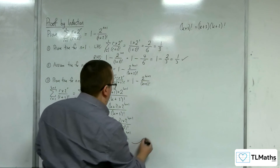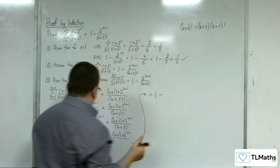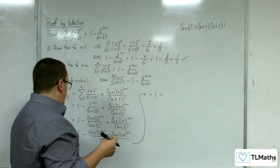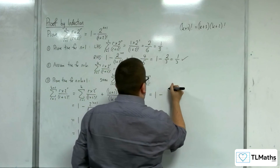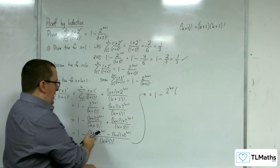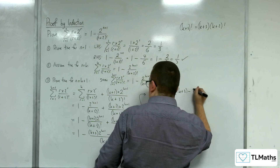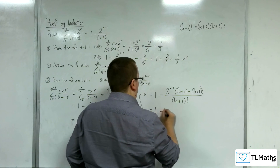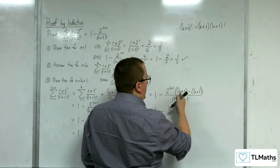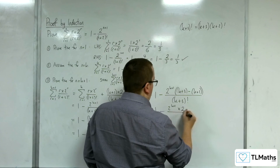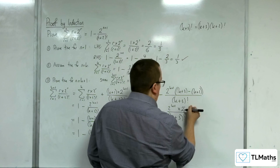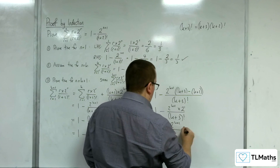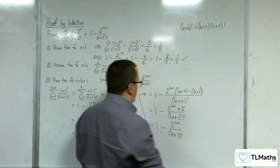Now I'm going to factor out 2 to the k plus 1. So we get 2 to the k plus 1 times (k plus 3 minus k minus 1), over (k plus 3) factorial. In the numerator, the k's cancel and 3 minus 1 is 2, so we're multiplying by 2. That's 2 to the 1, so 2 to the k plus 1 times 2 to the 1 — the powers add — giving 2 to the k plus 2 over (k plus 3) factorial. And that's precisely what I wanted to arrive at.